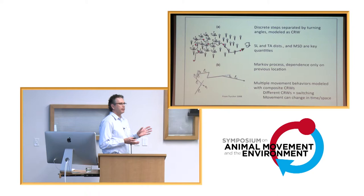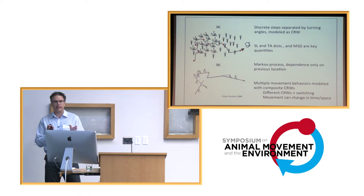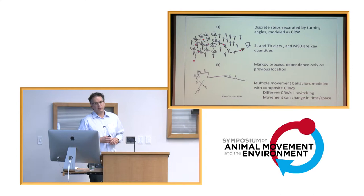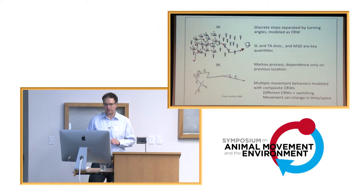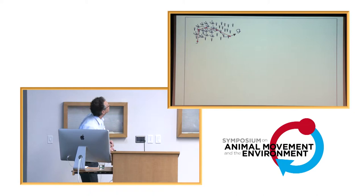More recently, that kind of basic modeling framework has been extended to include multiple behaviors by saying each distinct behavior has its own random walk model associated with it, and trying to estimate the sequence of those things from the data in one shot, so-called composite correlated random walk models.